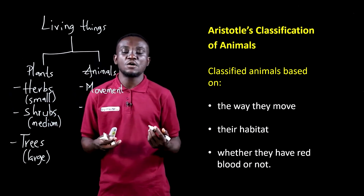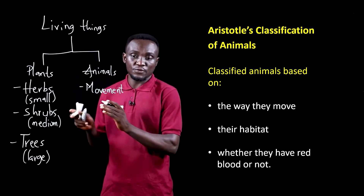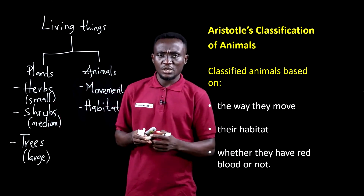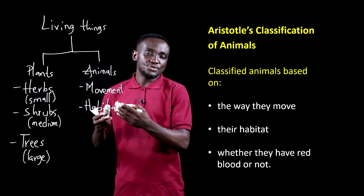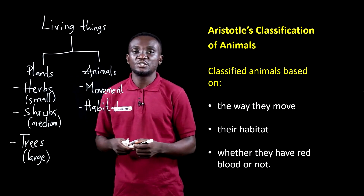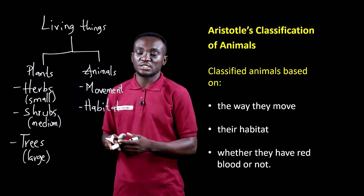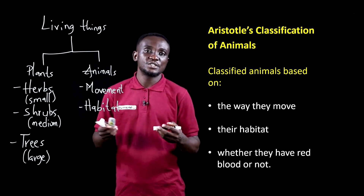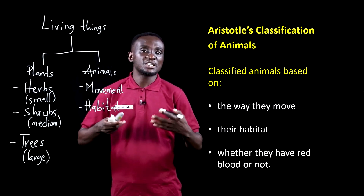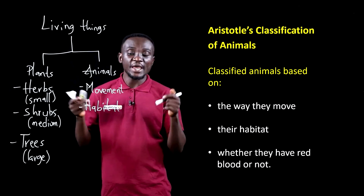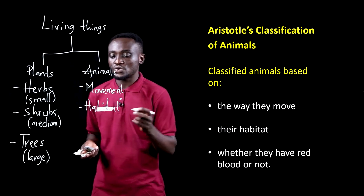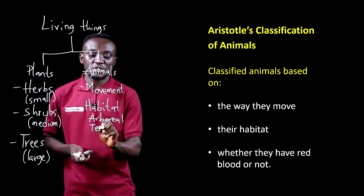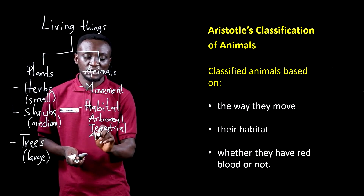He also looked at their habitat — where they live. Animals that lived in water he referred to as aquatic. Those that lived on land were terrestrial. And those that flew in the air and largely perched on trees or gave birth and nurtured their young in nests within trees he referred to as arboreal. So the three habitat groups are arboreal, terrestrial, and aquatic.